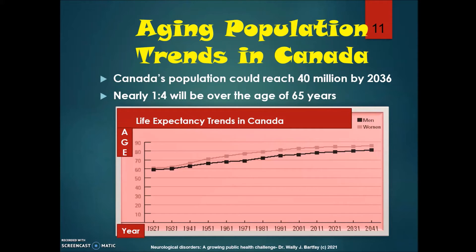Looking at aging population trends in Canada: Canada's population could reach 40 million by 2036, and nearly one in four Canadians will be over the age of 65 by that time. Looking at life expectancy trends, in 1921 the average life expectancy for both males and females was approximately 60 years of age. By 2041 it is projected to be in the 80s.